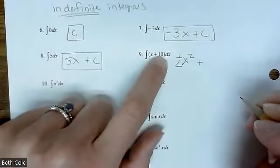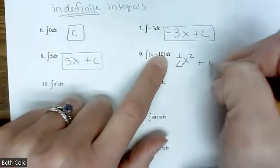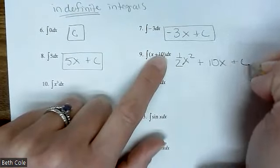1 half x squared. Good. Plus, now how would you do the 10? 10x and then plus c.